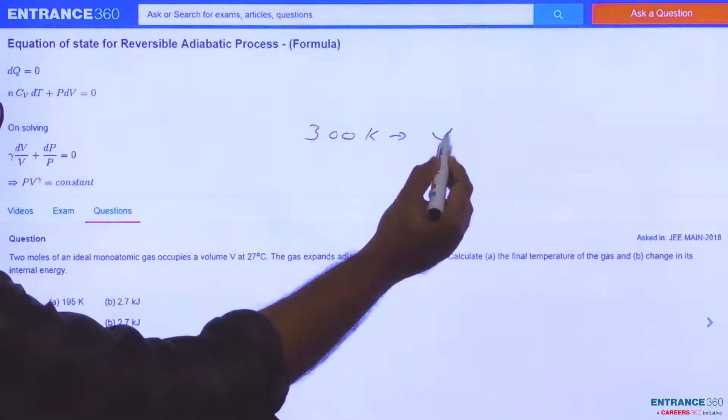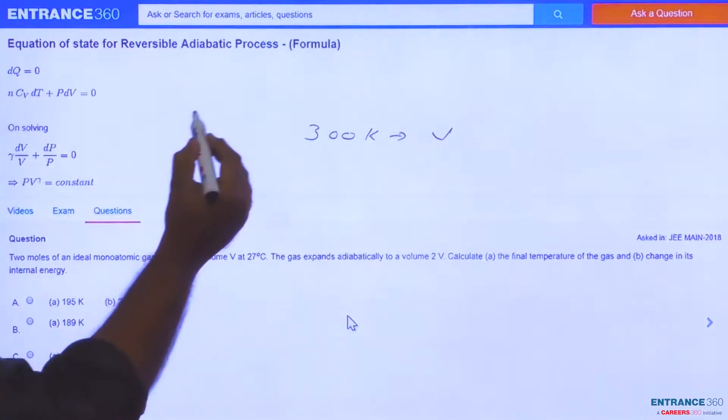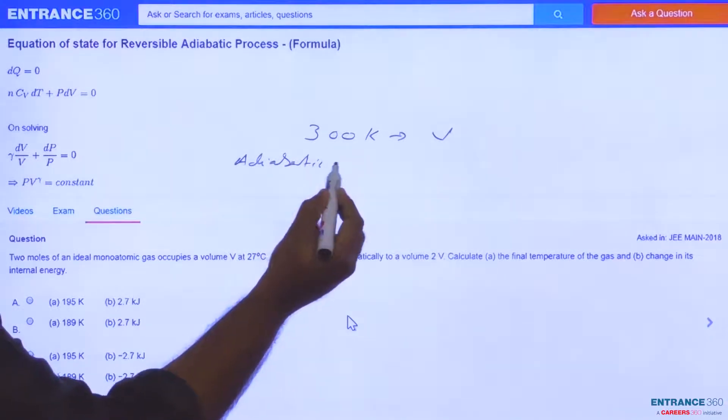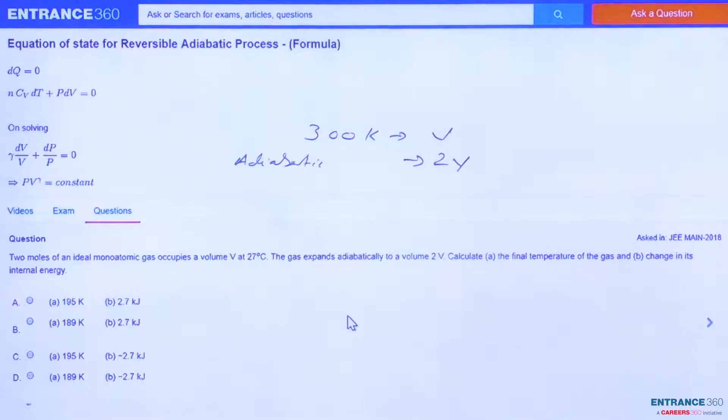The gas expands adiabatically to a volume of 2V. We have to calculate the final temperature of the gas and the change in internal energy.